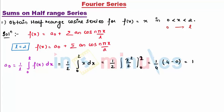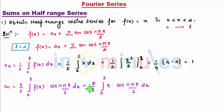Similarly, aₙ is (2/l) integral from 0 to l of f(x)cos(nπx/l)dx. So that is 2 divided by l, which is 2, integral from 0 to 2 of x cos(nπx/2)dx. So now 2 and 2 gets cancelled. Now we need to integrate this.